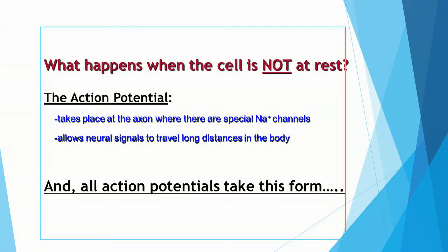Here is what we've been building up to. What happens when the cell is not at rest? What happens when there is a neural signal traveling along its length? The neural signal as it travels along the axon, the long part of a neuron, is referred to as an action potential. When the neural signal is traveling along the axon of a neuron, it is referred to as an action potential.